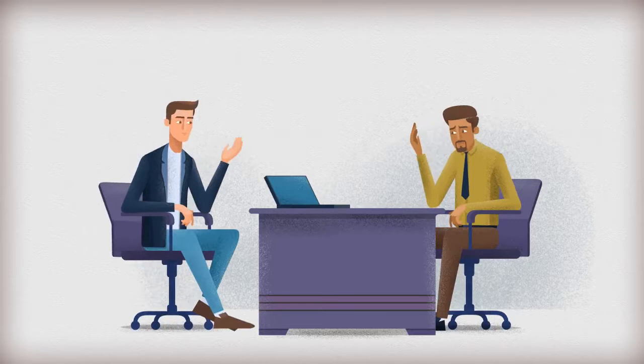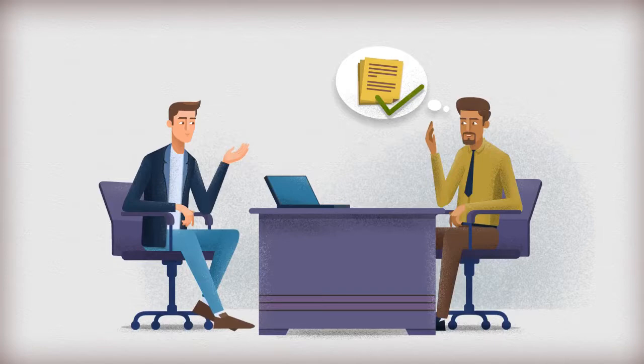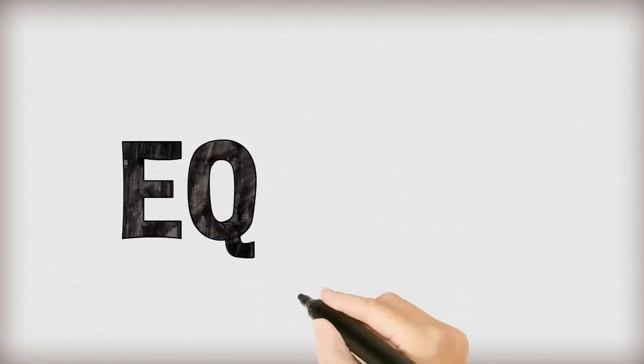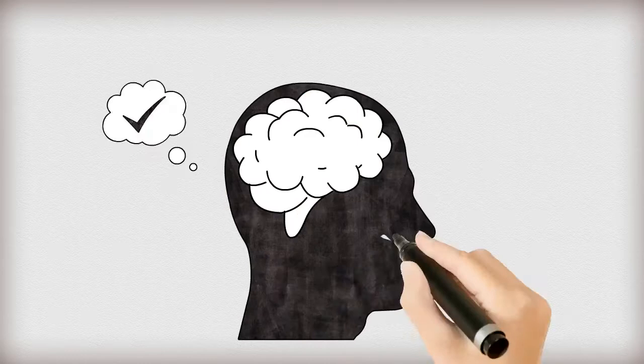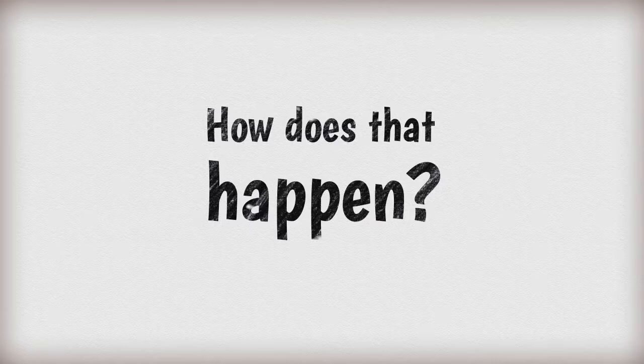What exactly is EQ? As mentioned earlier, EQ is the ability to identify your emotions and those of others and use that knowledge to make the best decisions regardless of circumstances. But how does that happen? It is possible to improve aspects of your EQ anywhere from 25% to 50%.